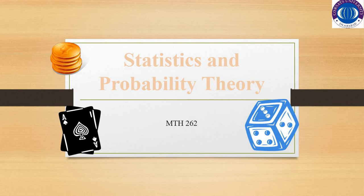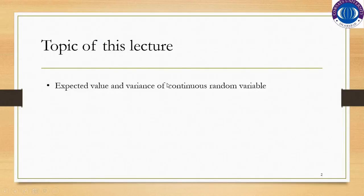Bismillahirrahmanirrahim. Welcome to the second part of the ninth lecture of statistics and probability theory. The topic we will continue with is expected value and variance of continuous random variable, as we were discussing in part one of this lecture.